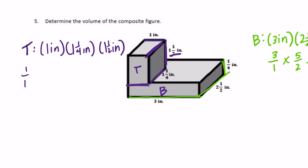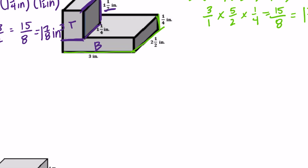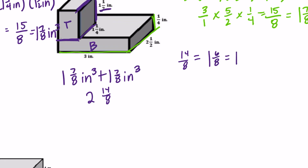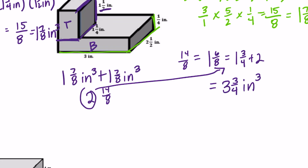The top prism has length 1 inch, width 1 and 1/4 inches (which is 5/4), and height 1 and 1/2 inches (which is 3/2). So 1 times 5/4 times 3/2 equals 15/8, which is also 1 and 7/8 inches cubed. Adding both together: 1 and 7/8 plus 1 and 7/8. The whole numbers give 2, and 7/8 plus 7/8 is 14/8, which equals 1 and 6/8 or 1 and 3/4. Total volume is 3 and 3/4 inches cubed.